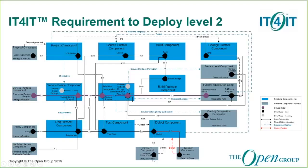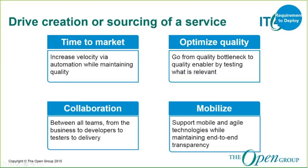There are links to other resources which will provide more detailed definition of each functional component, each data artifact, and all the relationships. The requirement to deploy value stream helps you drill down to the functional components and data associated with defining, building, testing, and deploying an IT service. By examining and understanding the key underlying elements of this stream, you become much better equipped to control the quality, utility, schedule, and cost of any service you deliver.